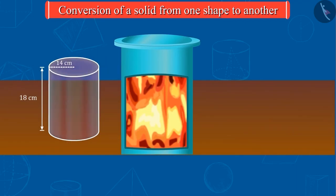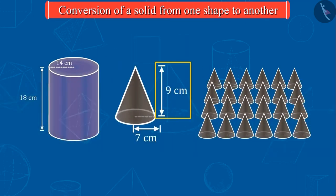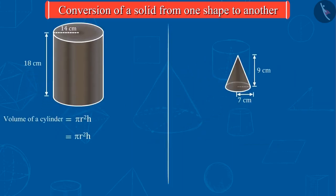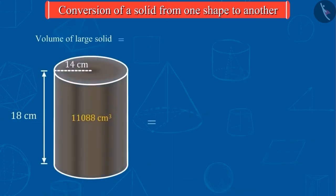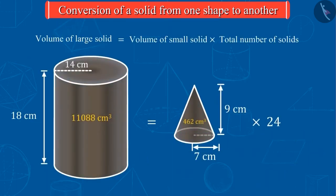If we melt this iron cylinder and make 24 cones of height 9 cm and radius 7 cm and then calculate their volumes, we will realize that this statement proves to be true even in this case.